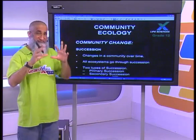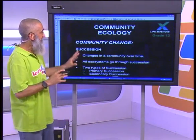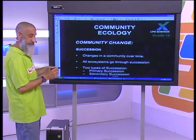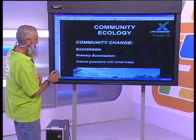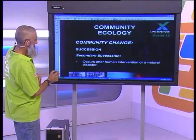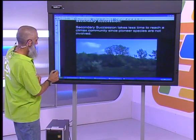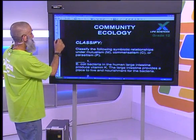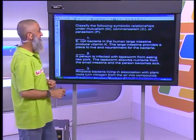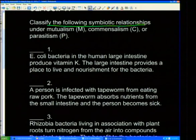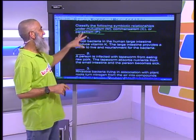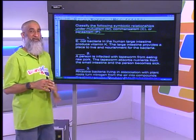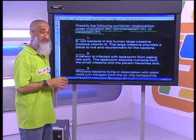That then brings us to the end of symbiosis. I'm going to skip one last bit and come back to it because we need to check our learning. Let's start with this exercise. The question says: classify the following symbiotic relationships under mutualism, commensalism, or parasitism. In our national and provincial exams, we rarely get questions exactly like this — this is more an exercise than an exam question.